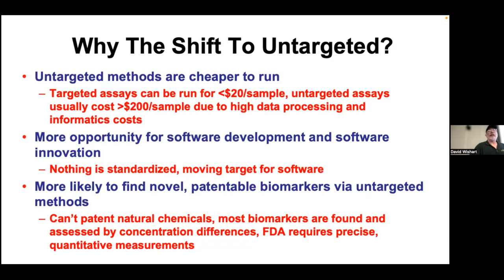You're more likely to find novel patentable biomarkers with untargeted methods—but the fact is you can't patent natural compounds. Most biomarkers are ones where you're using concentration thresholds. If you don't measure concentrations, you can't get FDA approval. The FDA, Health Canada, and everywhere else requires precise quantitative measures. If you don't quantify, you can't translate anything to the clinic, to industry, to pharma, or anywhere else.